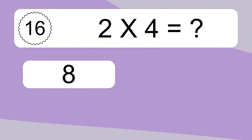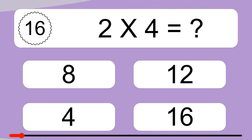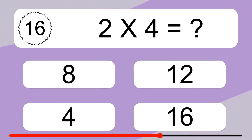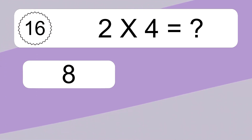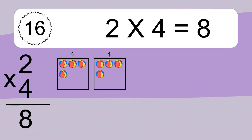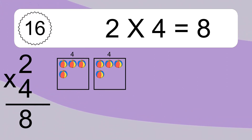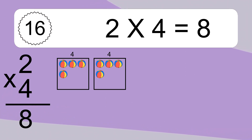2 times 4 equals what? This equals 8 balls. We have 2 boxes, and each box has 4 colorful balls inside. If you count all the balls in all the boxes together, you will have 2 times 4 balls. This equals 8 balls.